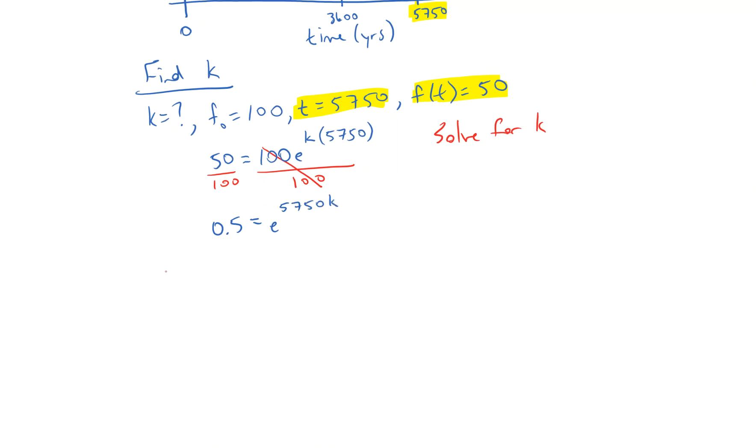And then I need to take the natural log of both sides to get rid of e. So the natural log of 0.5 equals the natural log of e to the 5750k. And that's going to cancel my e on the right. So now I've got the natural log of 0.5 equals 5750 times k. And finally, I'll divide both sides by 5750 to figure out my k value.